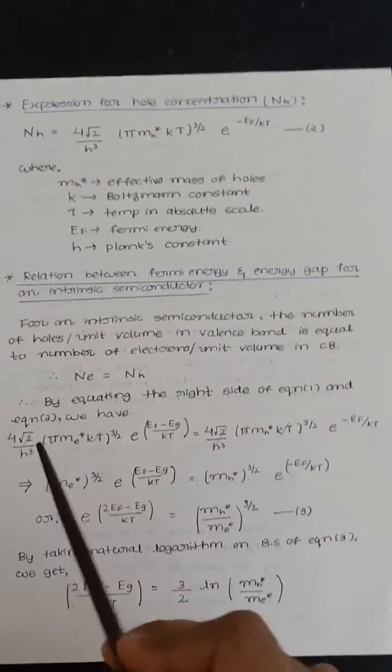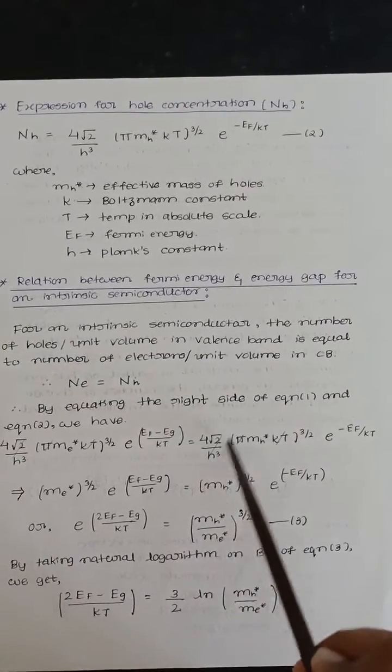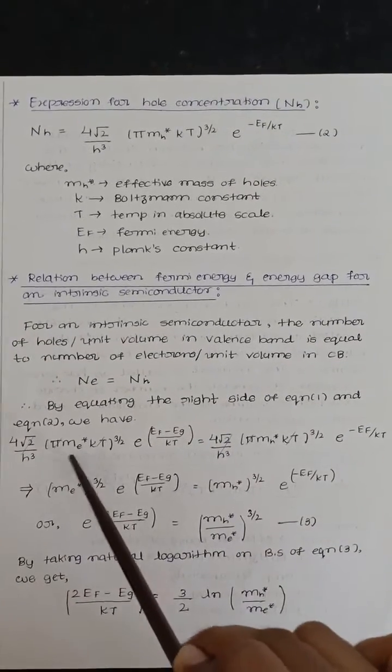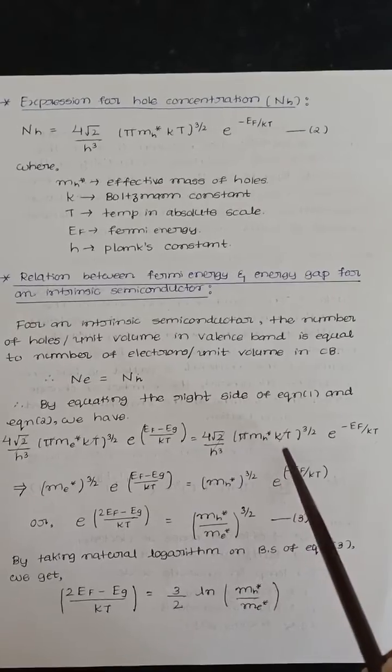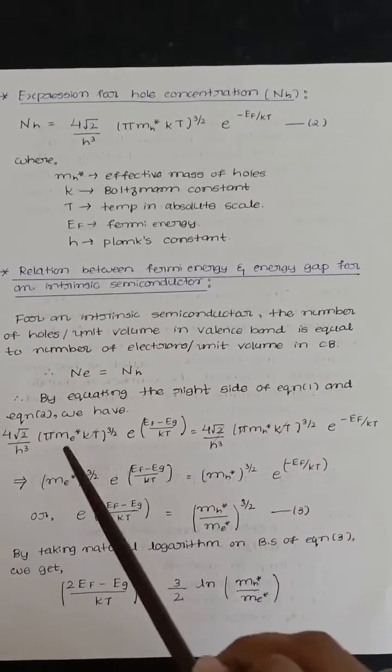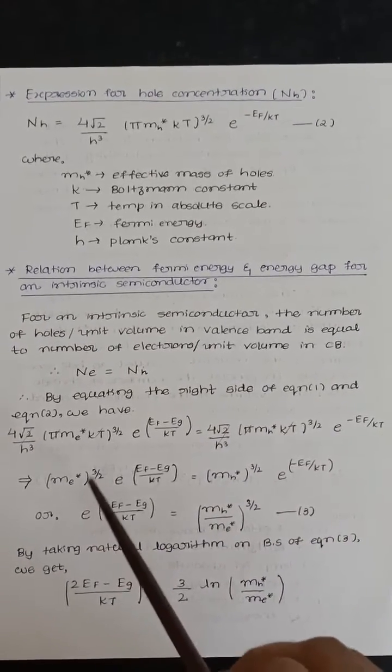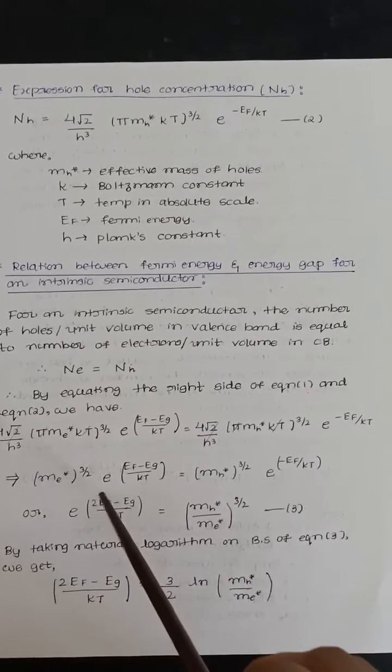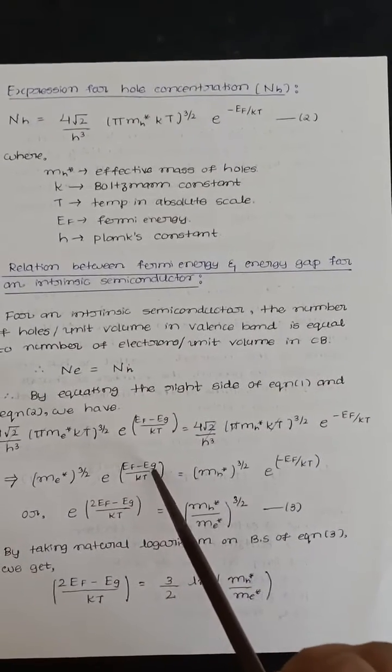Now this got cancelled and here pi KT and pi KT got cancelled. What is the remaining part? Remaining is Me star whole power of 3/2 into e to the power of (EF minus EG)/KT.